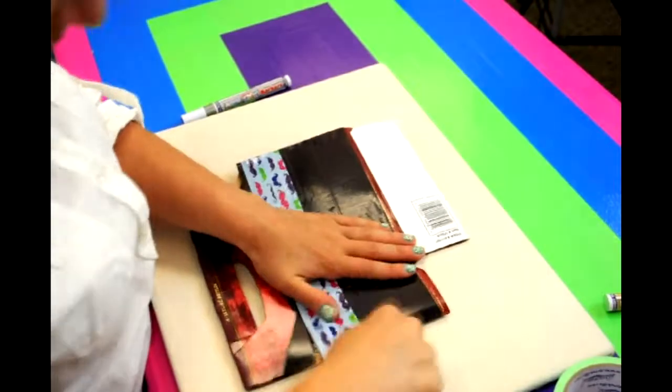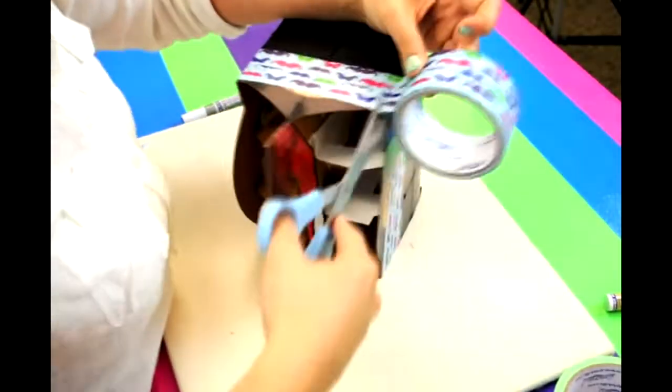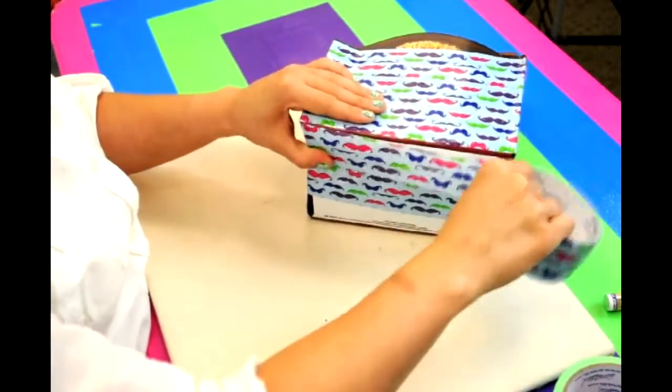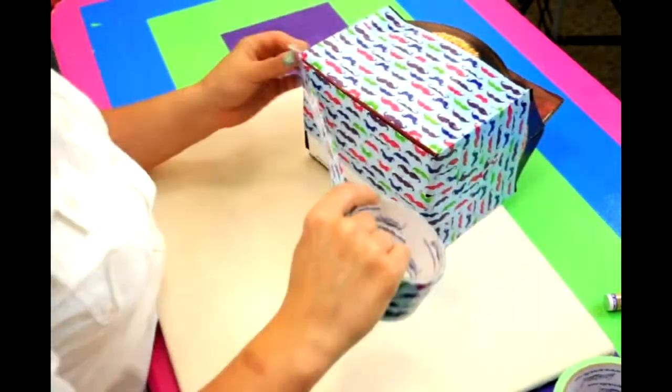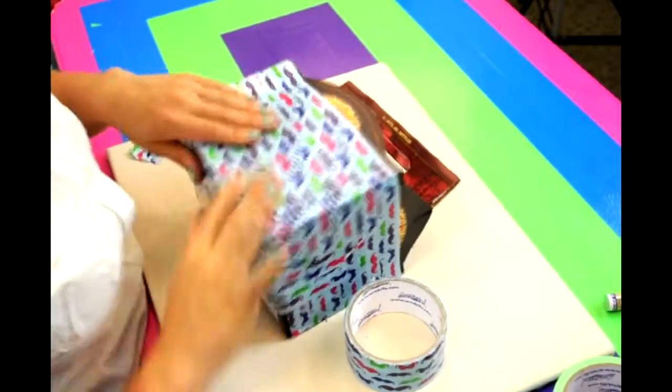Today we'll be using one of my favorite designs of duct tape, our mustache duct tape. It's super great for Father's Day. Start by covering the entire six-pack with our duct tape, leaving the handle exposed. That's for our next step.